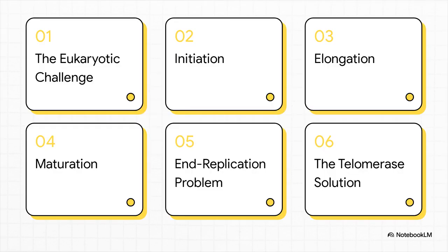Here's our game plan. We're going to break this down into six key stages. First, we'll get a handle on the unique challenges that eukaryotes face. Then we'll get into initiation — a cool two-step process called licensing and firing. After that, we'll look at the machinery of elongation, the clean-up crew and maturation, and finally we'll tackle that famous end replication problem and its absolutely brilliant solution: telomerase.